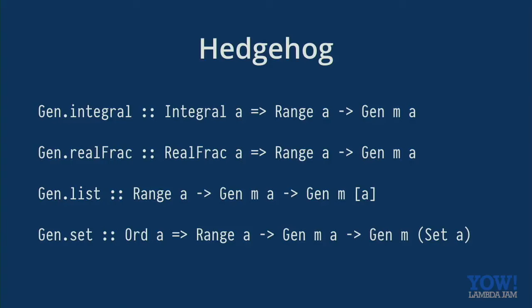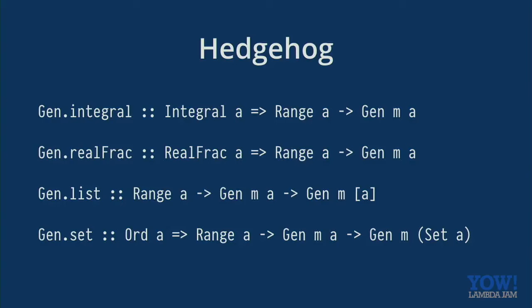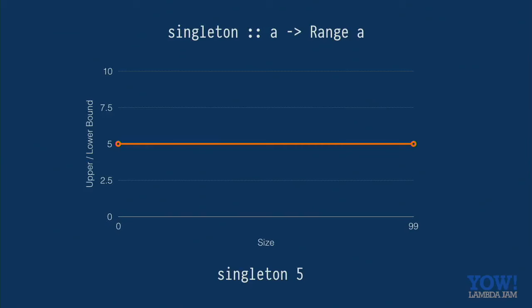Well, a range is this data type, which has two parameters. We've got an origin, which is the value that we would like to shrink towards. And we have this function, which from a size gives you the bounds of the thing that you're going to generate. And we have a bunch of these combinators for doing different things. So I'll show you what the combinators do. So, a singleton produces a range, which as the size increases, it does nothing. So a singleton five is always going to give you the bounds five to five, constant range.